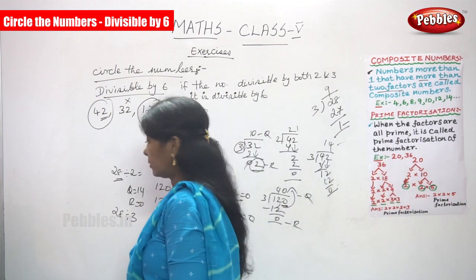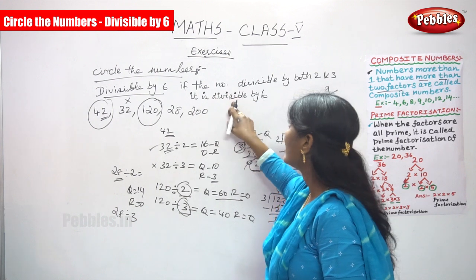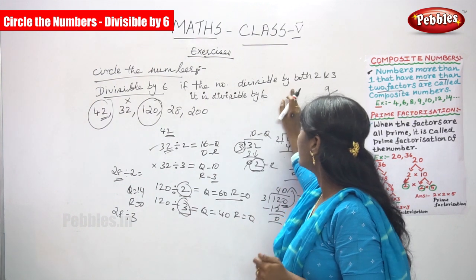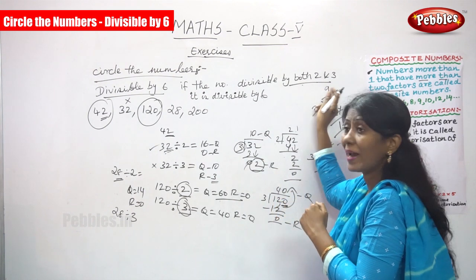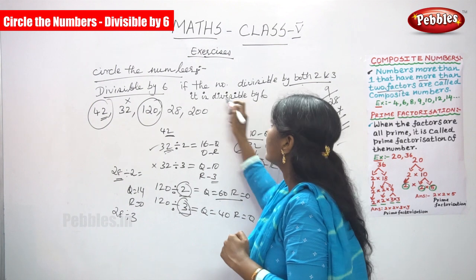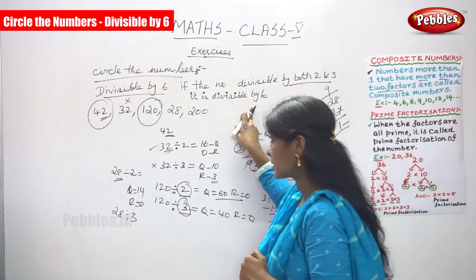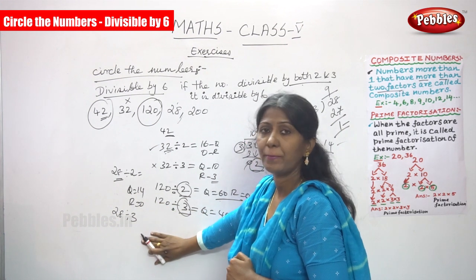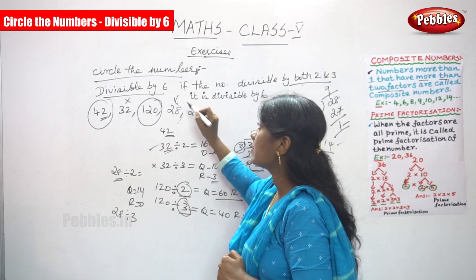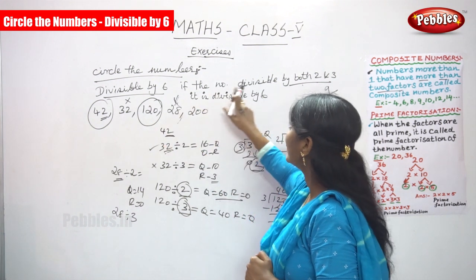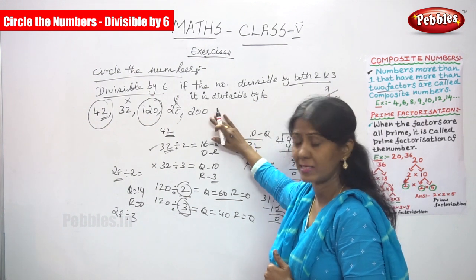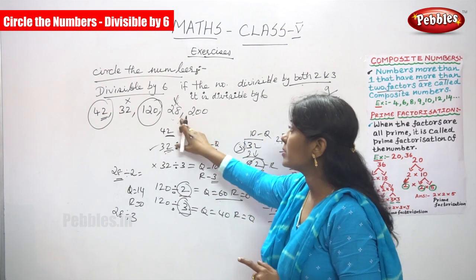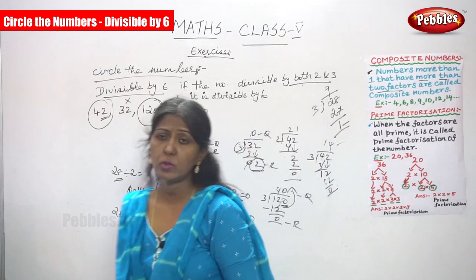So the rule is not applicable for 28. The rule requires the number to be divisible by both 2 and 3 to be divisible by 6. Since 28 is divisible only by 2 but not by 3, it is not divisible by 6.